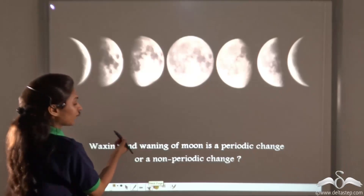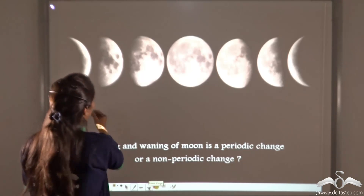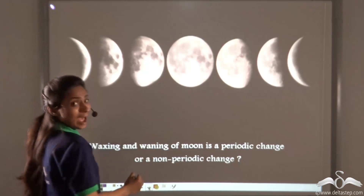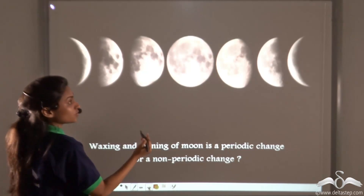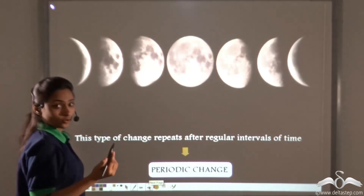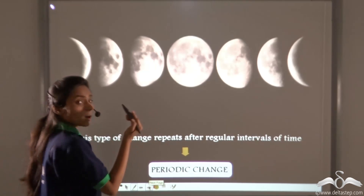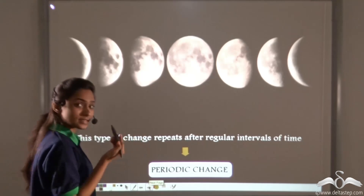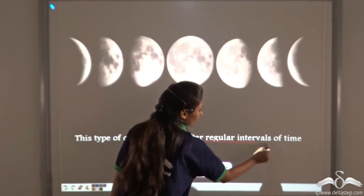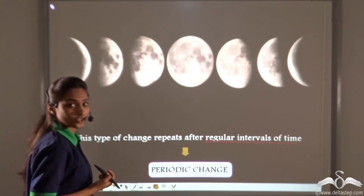What about waxing and waning of the moon — is it a periodic or non-periodic change? Waxing of the moon means changing from new moon to full moon, and waning means changing from full moon to new moon. This type of change repeats itself after a fixed interval of time — say, fifteen or twenty days. It is bound to happen and we can predict it. So this is a periodic change.